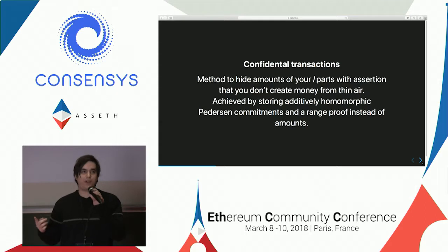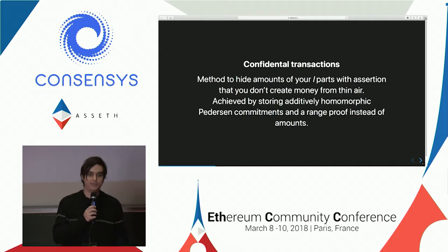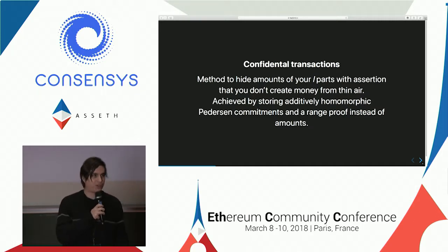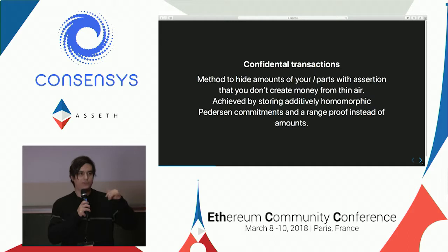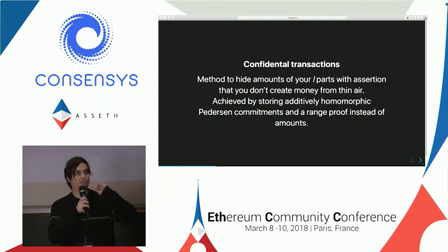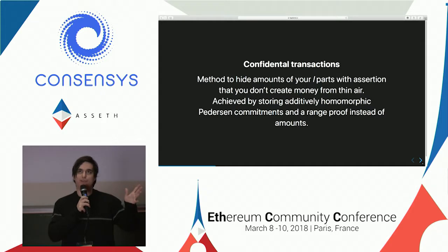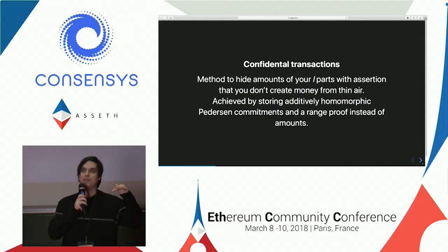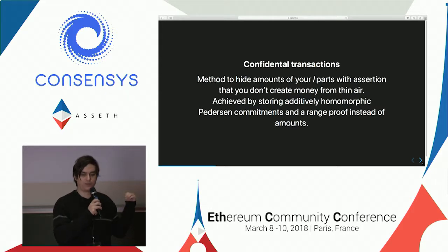The CT part of RingCT — the confidential transactions — is what's hiding the amount. Ring signatures hide your identity, and confidential transaction schemes hide the amounts you are sending. We do this with Pedersen commitments and range proofs. Topologically, we are trying to reach some linearity: first we lock in the amount you want to spend, and then range proofs prevent you from playing with different linear combinations for the same amount. So you can't have negative values. And there are improvements on range proofs too, called Bulletproofs from Bootle — but that's for another talk.